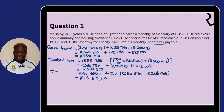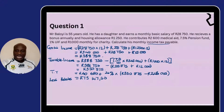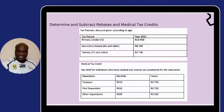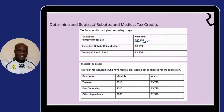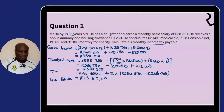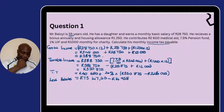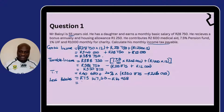Now we need to subtract the rebates from that amount. How do we subtract the rebates? We check the age of this person — he is 55 — so let's go to the rebate table. Everyone who is under 65 qualifies for the first rebate only, so we subtract R14,958. R73,147.50 minus R14,958 gives us R58,189.50.